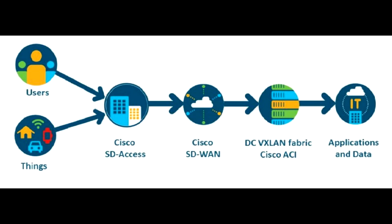At its core, SD-Access is a comprehensive network architecture that combines the fundamental principles of software-defined networking, SDN, with advanced automation and security to revolutionize network access. The primary motivation for SD-Access is to tighten security controls on whom and what can connect, as well as determine what connected entities can do.